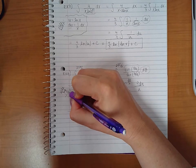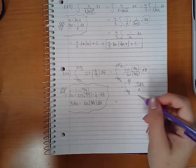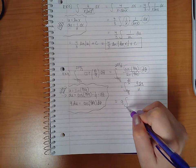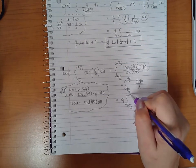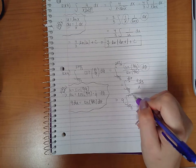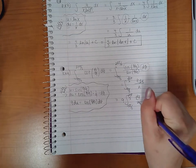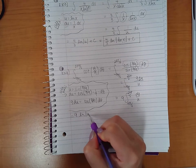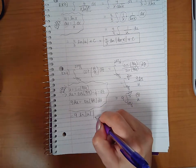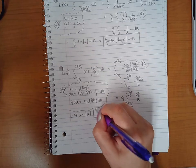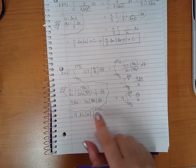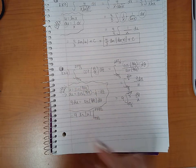Then I can take the 9 out as a multiplier. We will get 9 du over u, which we know is just the ln of the absolute value of u. However, the problem is we can't plug these numbers in because these values are for thetas, not for u's.